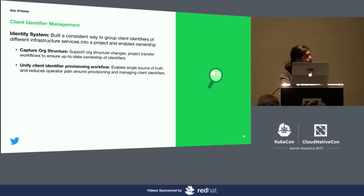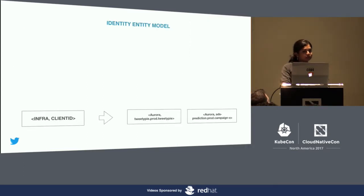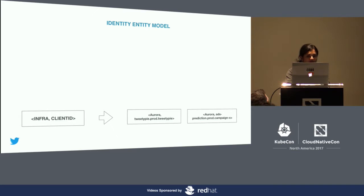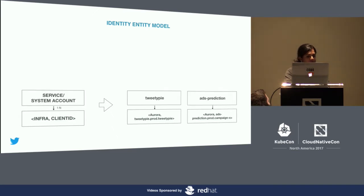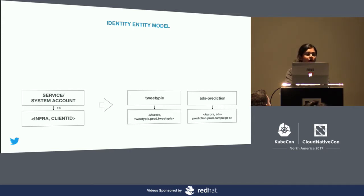This identity system groups client identifiers into projects, associates teams with projects, and allows management operations on these entities. From the bottom of the model, client identifiers are scoped per infrastructure and are associated with a service account. The backend that powers the service account is modeled to be pluggable — we use LDAP groups. Service accounts are primarily used for authentication and are expected to eventually be used for authorization.